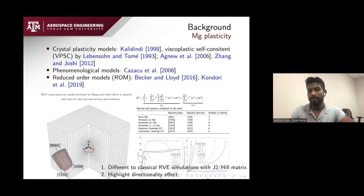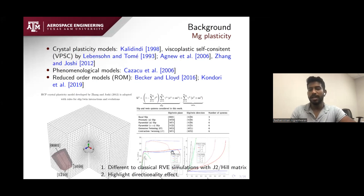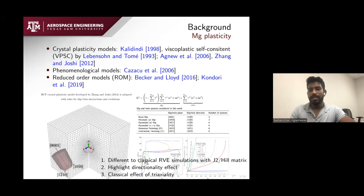Depending on the loading direction, you will see totally different kinds of response. For instance, if you load in the prismatic direction, you will get a glide deformation mode. If you load in the C-axis direction, you will get a twinning deformation mode followed by gliding. You also see the classical effect of triaxiality — increase in triaxiality leads to reduction in strain to failure, and so on.